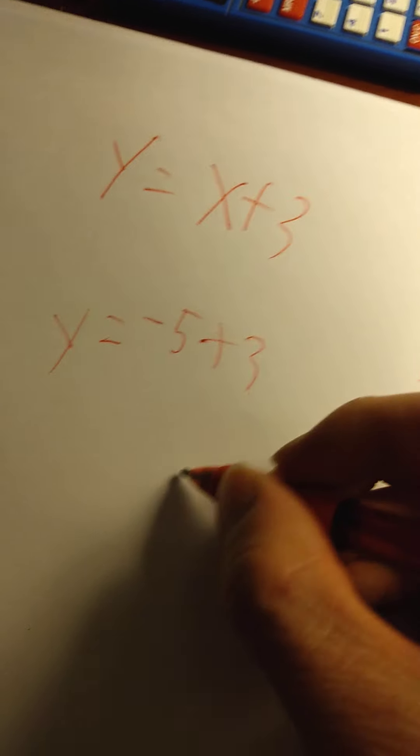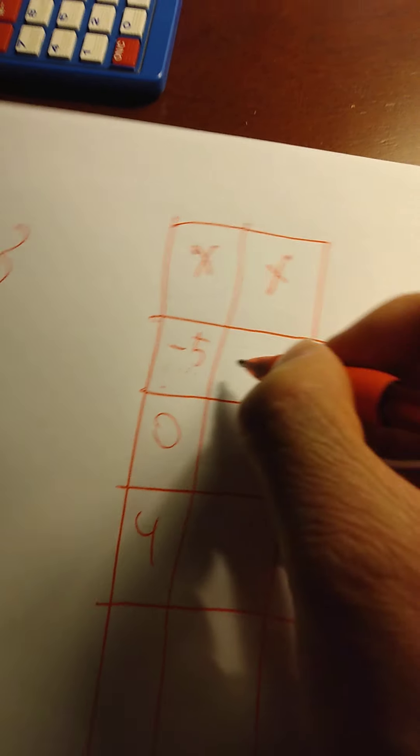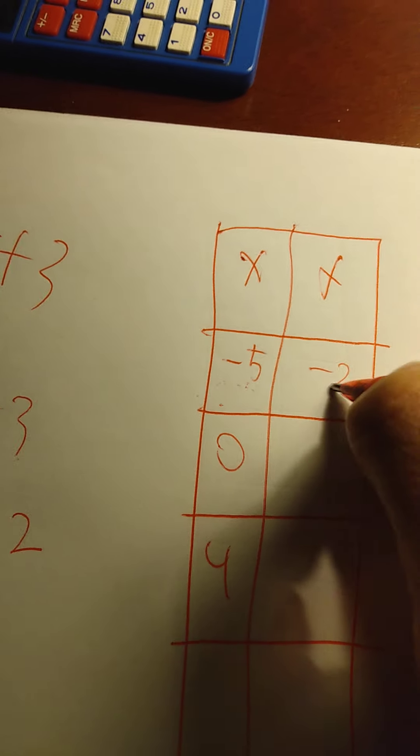Negative 5 plus 3, that would be negative 2. So if x was negative 5, y would be negative 2.